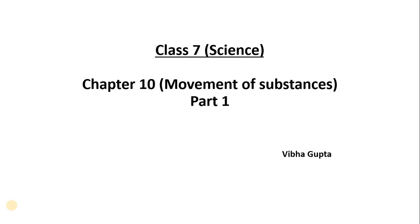Hello students, today we are going to start Chapter 10 - Movement of Substances. Each and every cell in the body of an organism, whether it is a plant or an animal, it requires air, water and food for survival. It is therefore necessary to transport these substances to all the parts of the body.